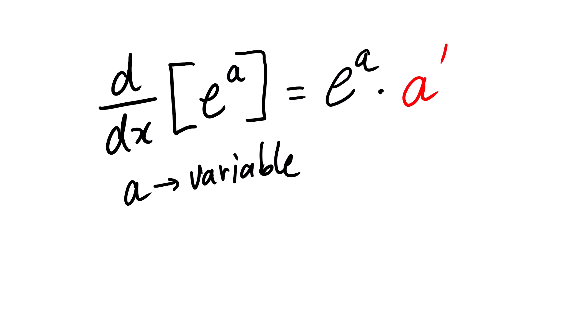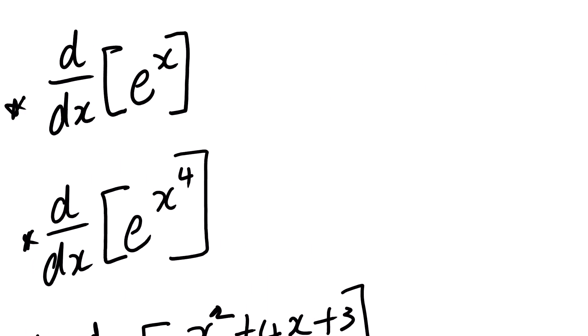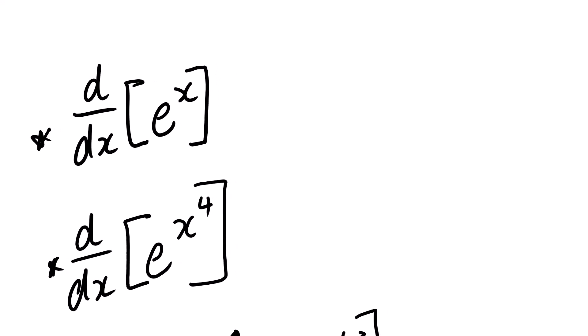Our next derivative is the derivative of e to the power a, where a is the variable. The derivative of this type of function will be e to the power a multiplied by the derivative of the power. For example, the derivative of e to the power x is e to the power x multiplied by the derivative of x, which is 1 — so the answer is e to the power x.